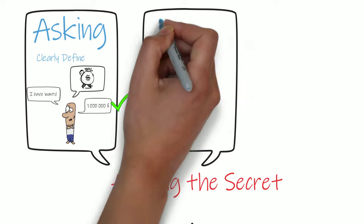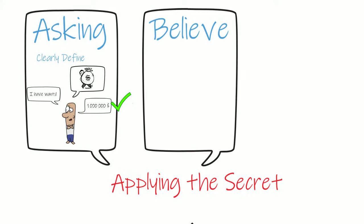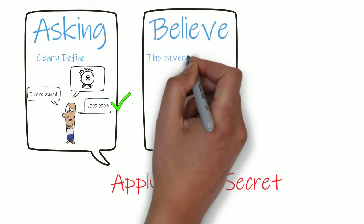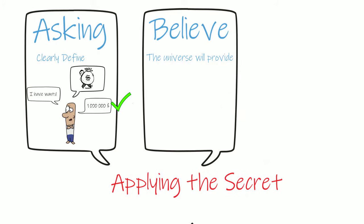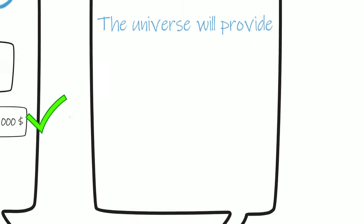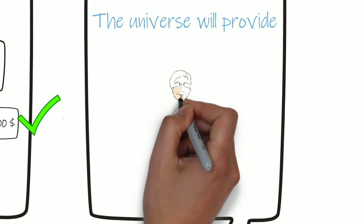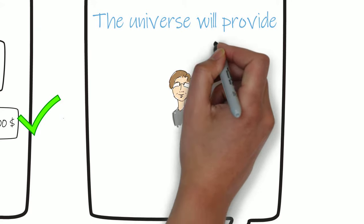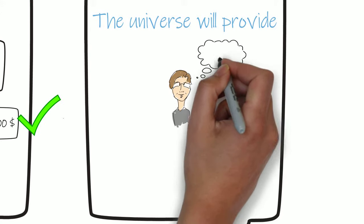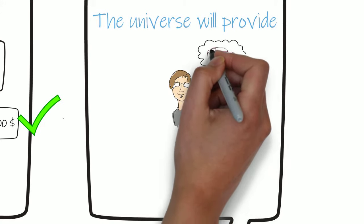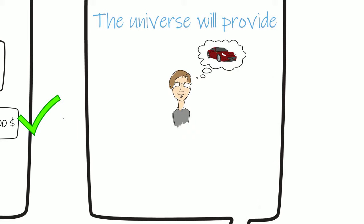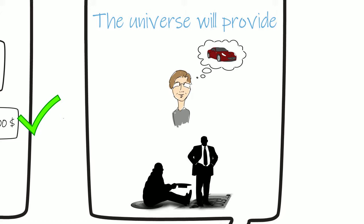The second step is believing. You need to believe that the universe will give you that which you asked for. This is said to be the hardest step. Some tips to help with this process are visualization, which involves either at night or in the morning visualizing having the thing you've asked for, and secondly, giving that which you asked for, but you've got to give from the feeling of abundance and not as a means to an end.